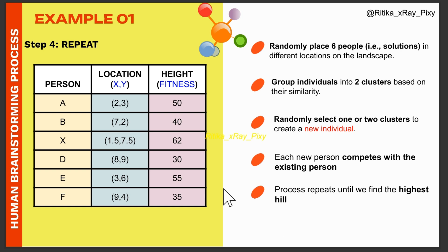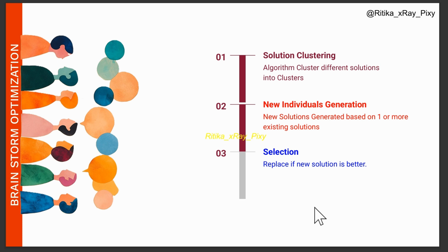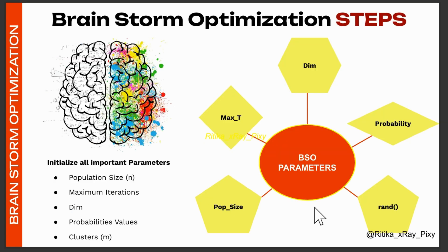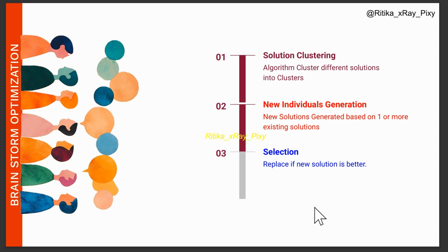After this we repeat until the stopping condition is met. This algorithm works by grouping, generating, and selecting solutions in a way that mimics human brainstorming. Solution clustering means grouping similar solutions together — like sorting ideas into categories. Different methods like k-means clustering or other techniques can be used for this grouping, and over time solutions will gather in the best area, helping the search become more focused. A random replacement chance is added to avoid getting stuck in local optima.